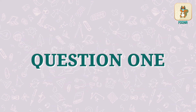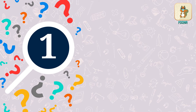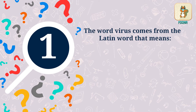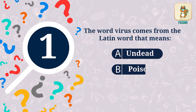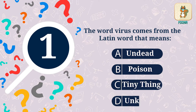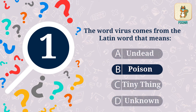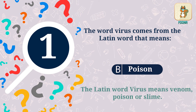Question 1. The word virus comes from the Latin word that means undead, poison, tiny thing, or unknown. The answer is poison. The Latin word virus means venom, poison, or slime.